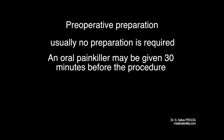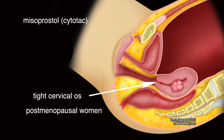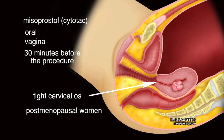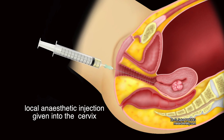An oral painkiller may be given 30 minutes before the procedure. When a tight cervical os is anticipated, for example in postmenopausal women, a tablet called misoprostol or cytotec may be given orally or placed in the vagina 30 minutes before the procedure. Sometimes, a local anesthetic injection may be given into the cervix before the procedure.